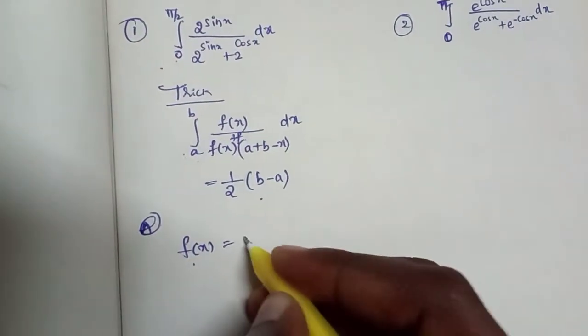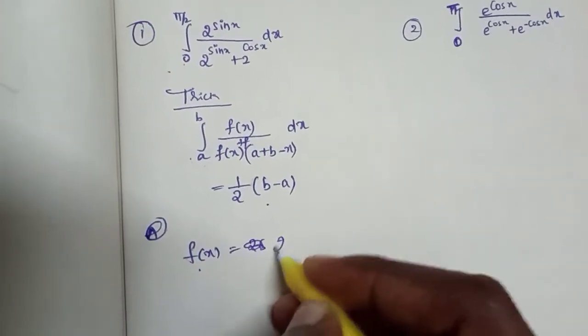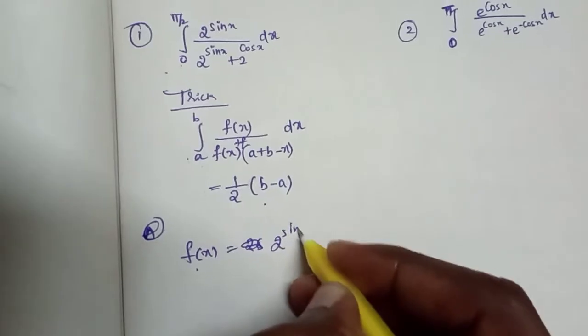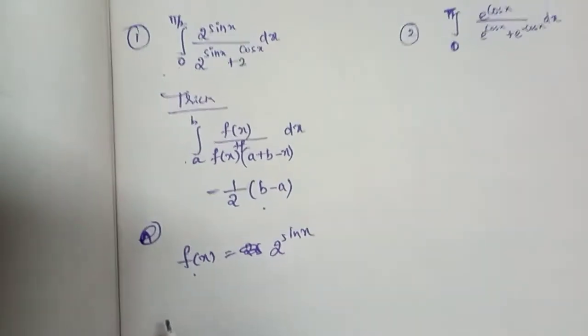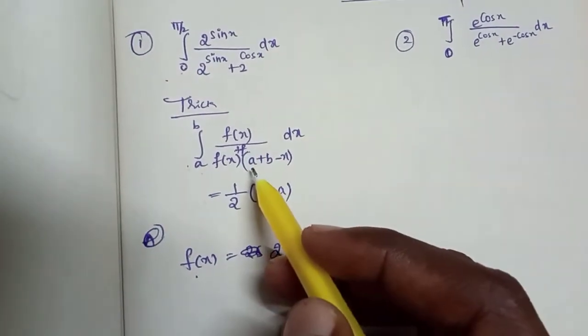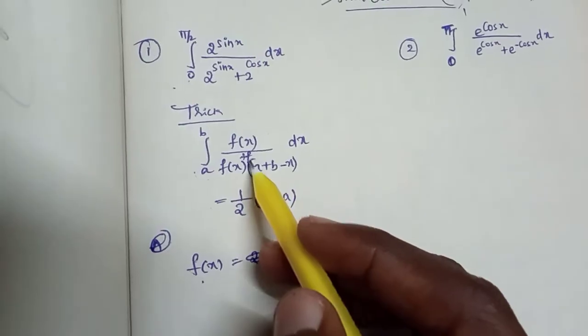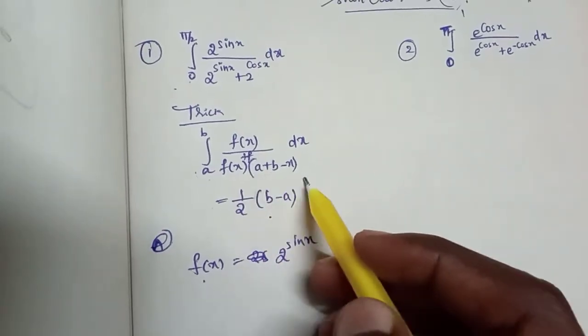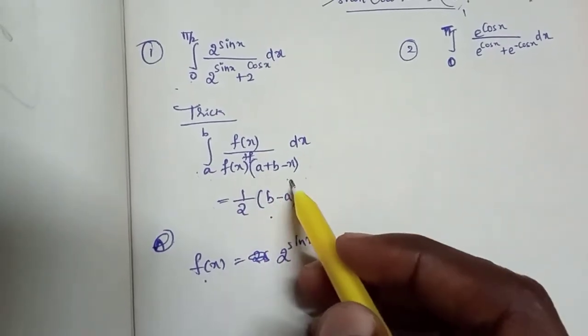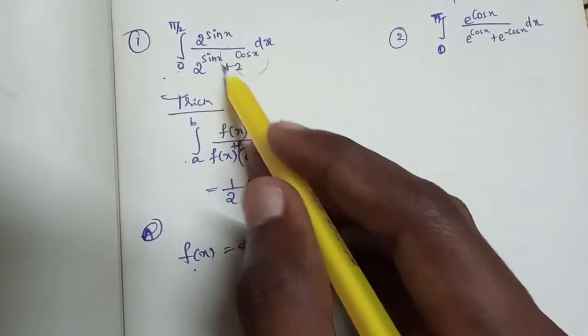f of x is equal to 2 power sin x. The format we are using is: f of x in the numerator, and the denominator is f of x plus f of a plus b minus x. This is the King's property format.